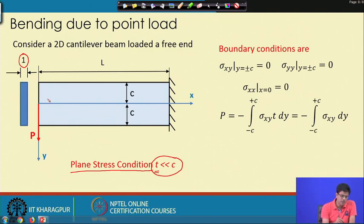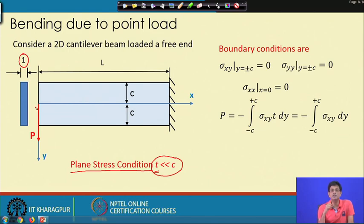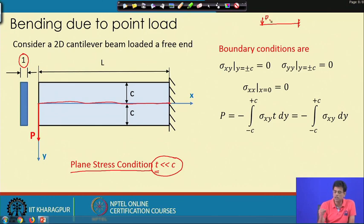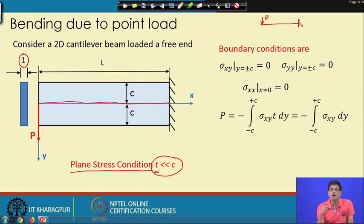We need to find the boundary conditions in terms of stresses. From strength of materials for the 1D case, the beam is fixed at one end and boundary conditions are displacement-based: displacement and slope equal zero. But here we need stress-based boundary conditions.